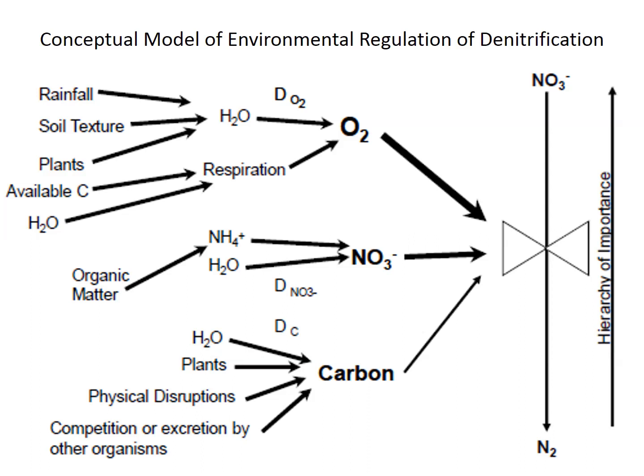If nitrification is converting ammonium ion to NO₃⁻, that provides the substrate. But if there is not enough nitrate, denitrification will cease. Of course, the presence of a carbon source is also critical, since most denitrifiers are heterotrophs and not autotrophic. Controlling these factors can effectively regulate denitrification.